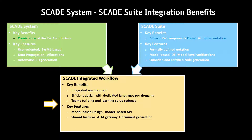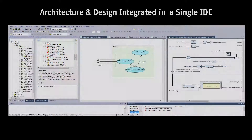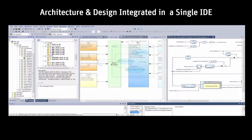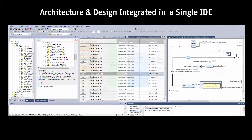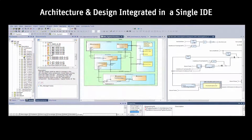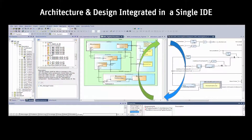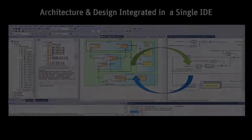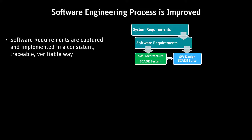Both tools share key features like model-based design, common application lifecycle management gateway, and document generation. In that environment, architecture software design is developed using block diagrams coordinated with their synchronized tables. An architectural block and its corresponding implementation can be synchronized. Interface modifications will be managed on both sides. As a result, the overall software engineering process is improved.